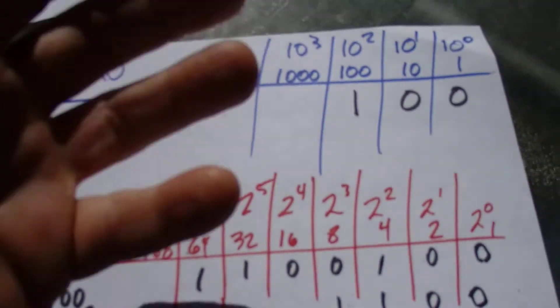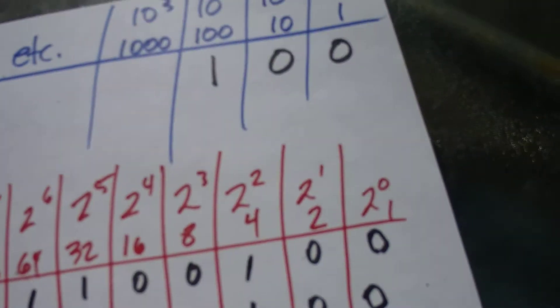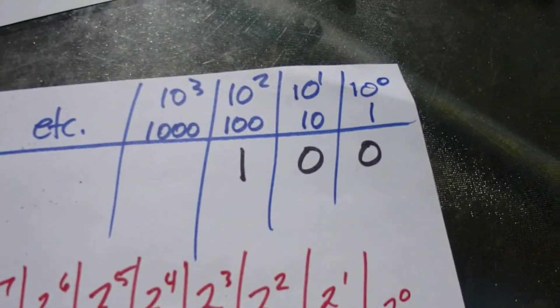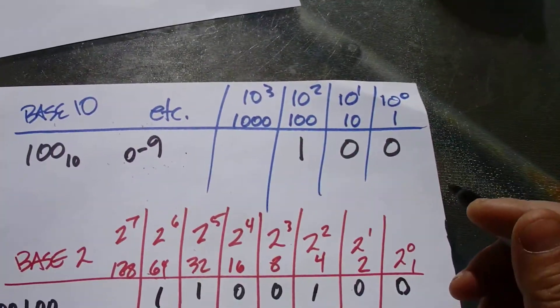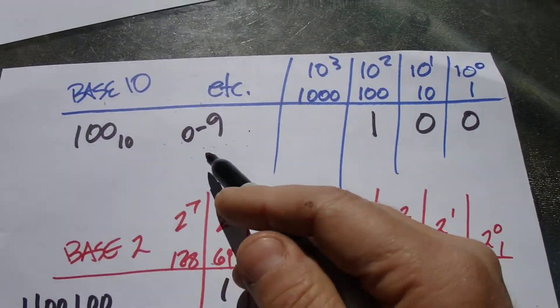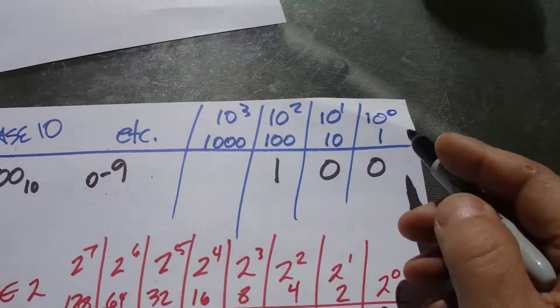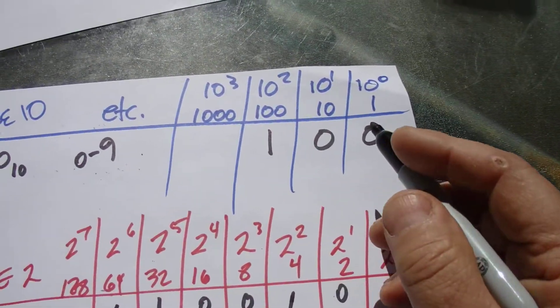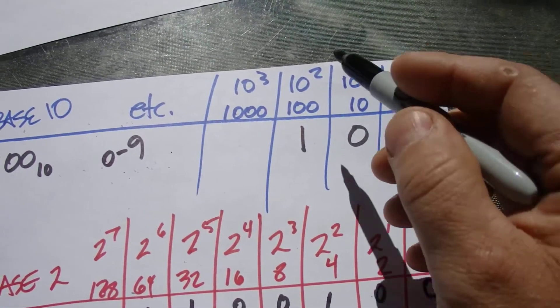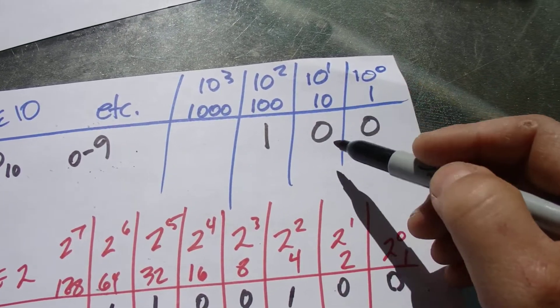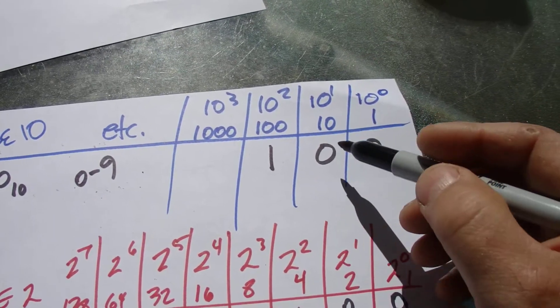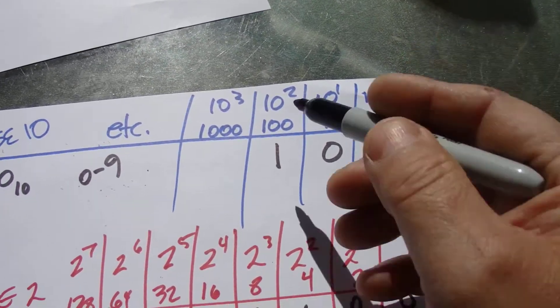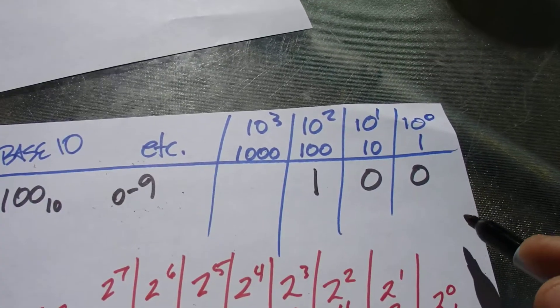I'm just going to show you real quick about base 10, because people don't think of it as base 10 — they just think of it as what we count with, what we've been taught to count with. You've got the numbers 0 to 9 to work with, so there's your 10 numbers. And if you wanted to represent 100 in base 10, you would come over to the 100's register and put in a 1, because it's 1 times 100, and you'd put a 0 times that and a 0, and you could put as many 0's this way as you want — it doesn't make any difference.